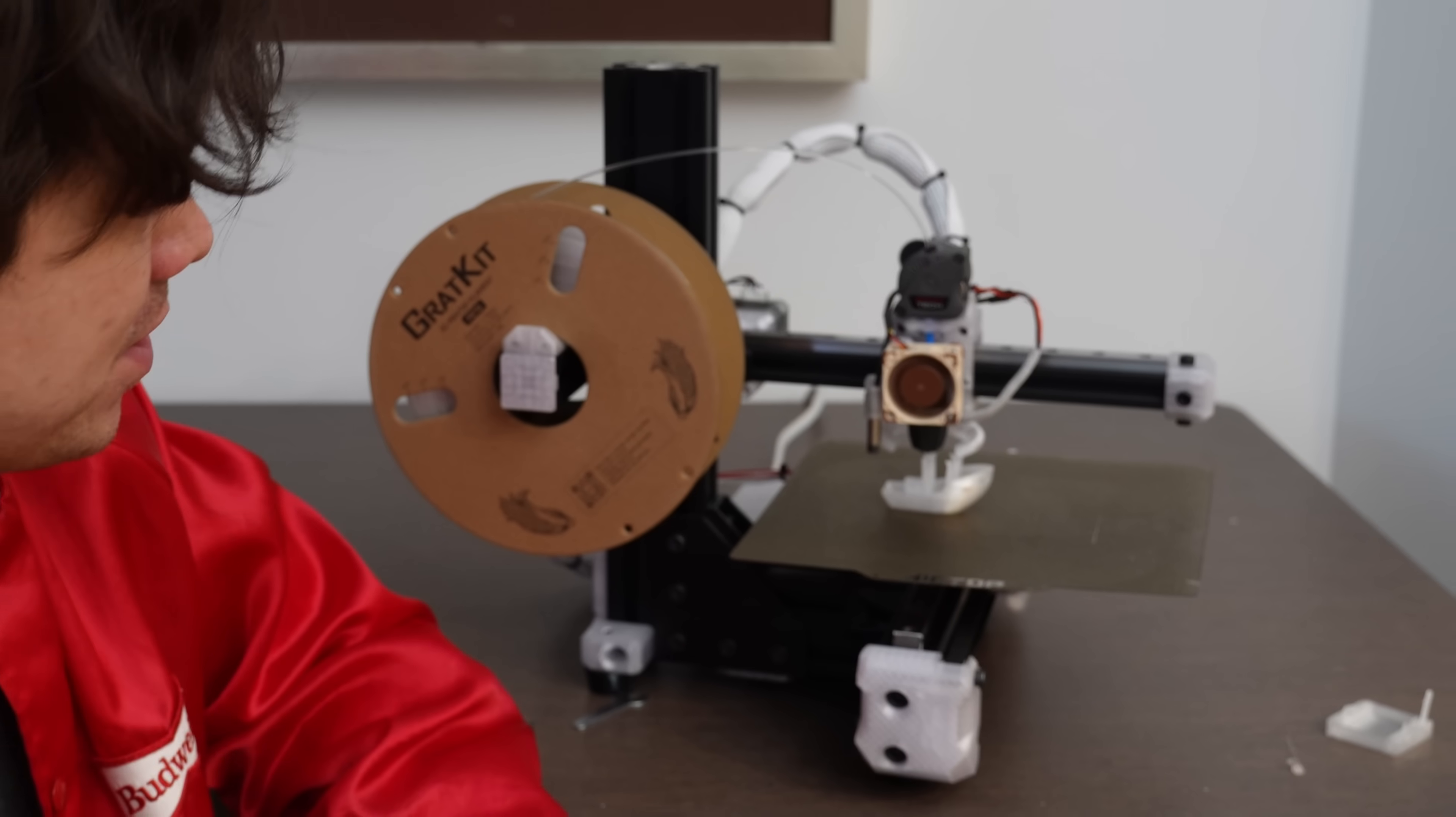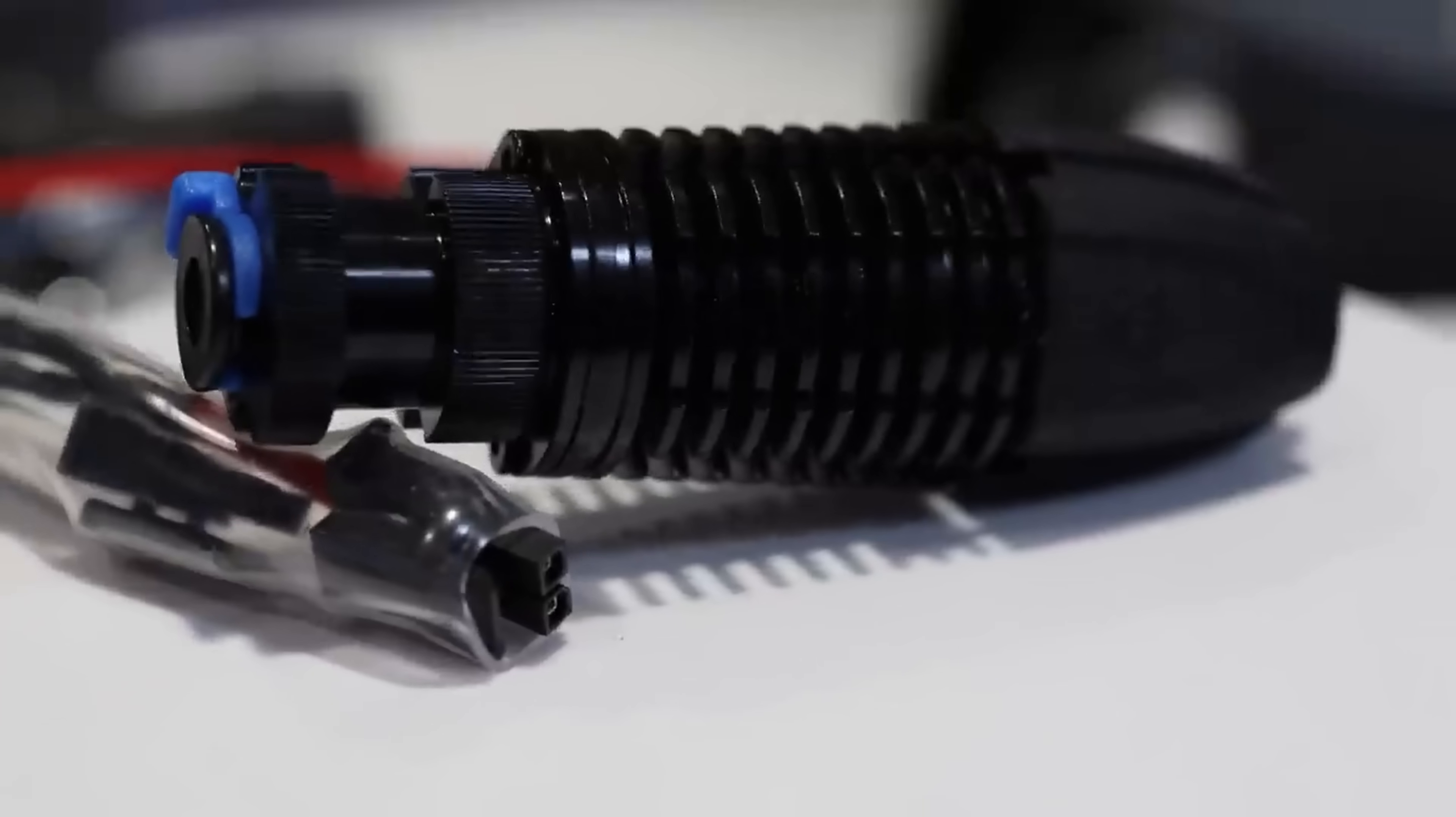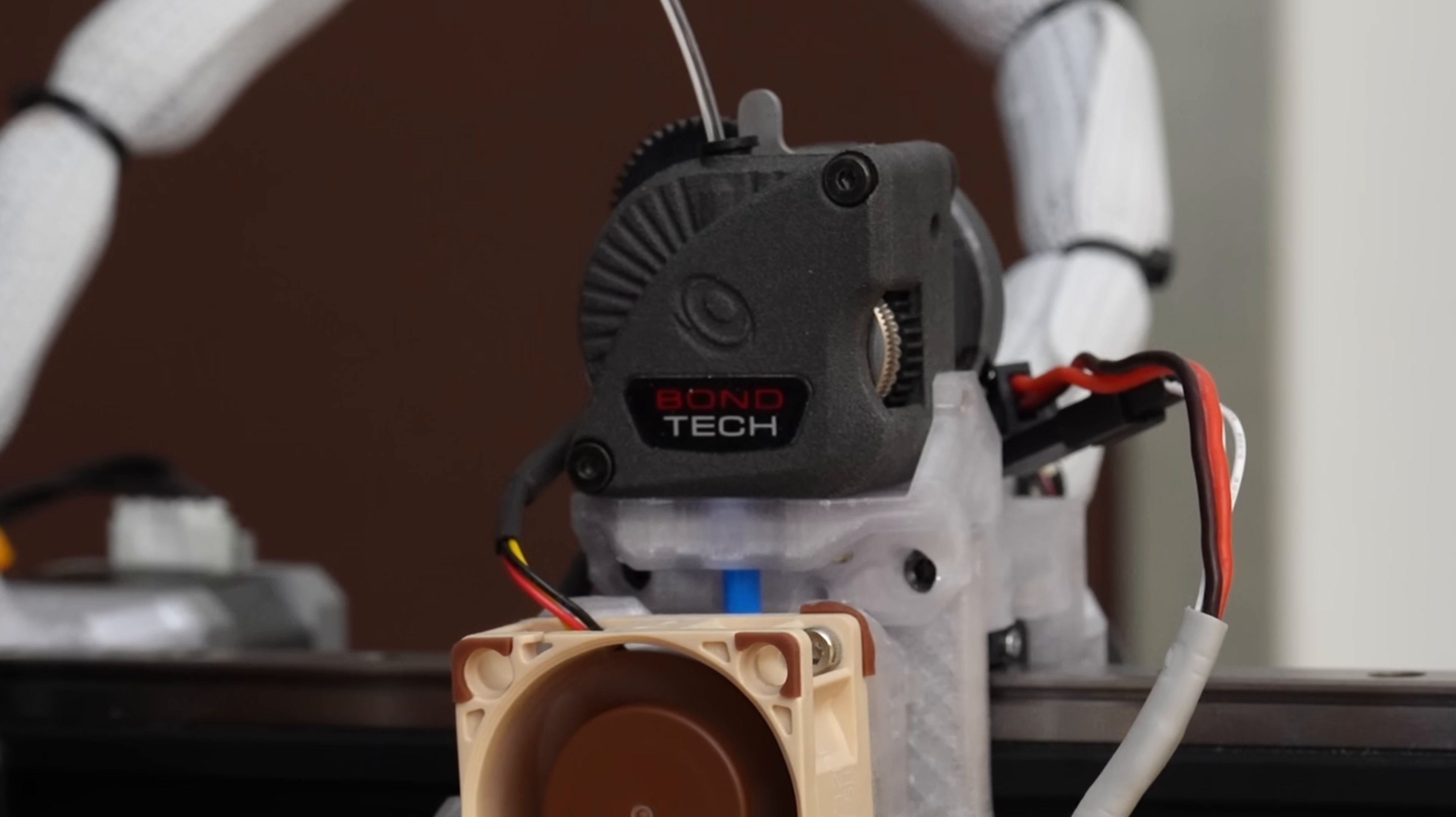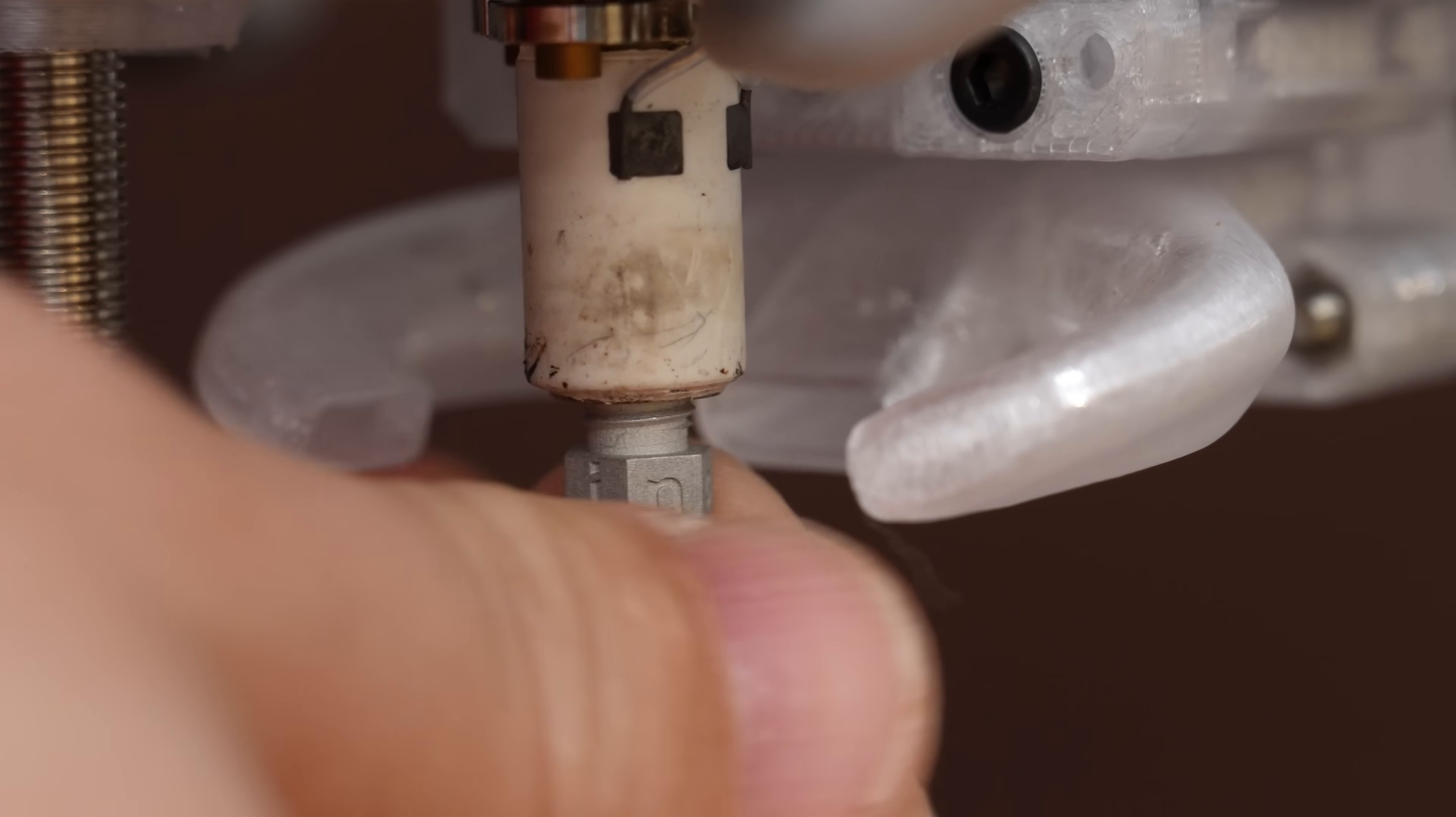Most of these parts on this 3D printer are in fact 3D printed, but there's always a couple of parts that you have to buy off the shelf. On this printer we actually have a mostly 3D printed extruder, but now we're going to add a 3D printed nozzle.